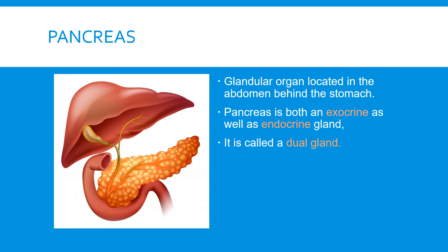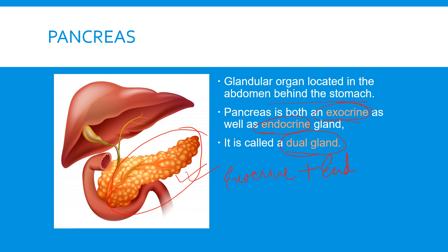Next comes the pancreas. The pancreas is located in the abdomen, behind the stomach. It acts as both an exocrine and an endocrine gland — the exocrine part has ducts and the endocrine part is ductless. Because it has both exocrine and endocrine functions, it is called a dual gland.